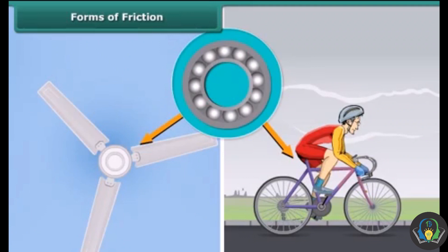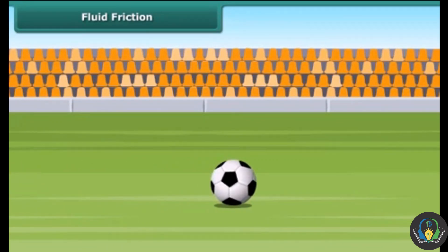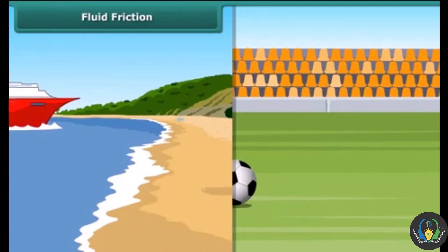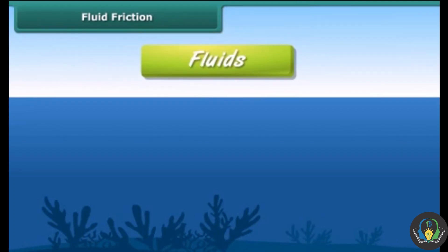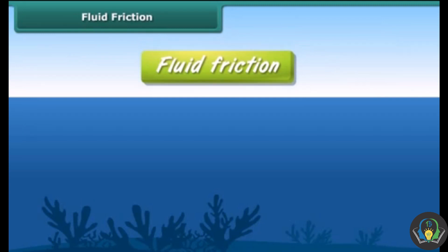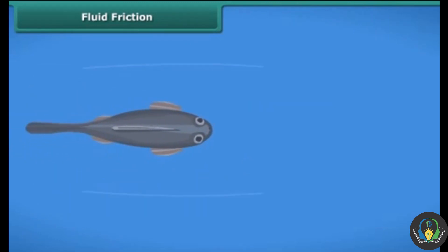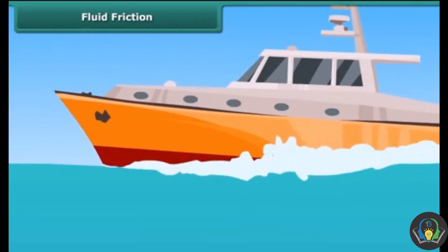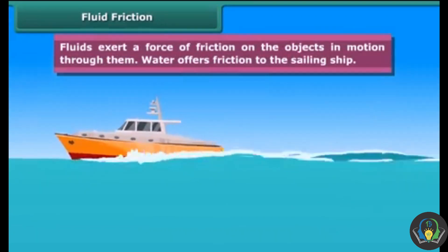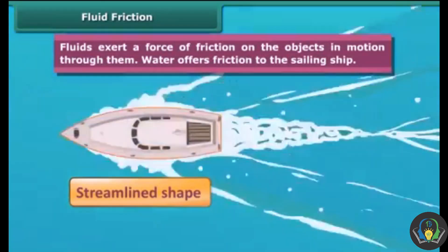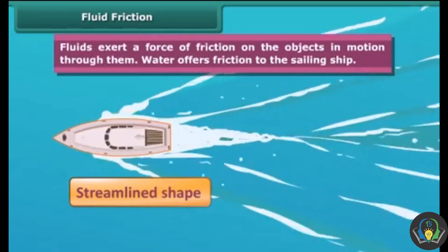The next type is fluid friction. It is not only the ground which offers friction — surfaces like water and air also exert frictional force. The common name for gases and liquids is fluids. The streamlined shape of fishes helps them reduce the force of friction between their body and water. Boats and ships are narrow at the front and sloping on the sides — this is known as a streamlined shape, which reduces friction from the fluid through which those objects move.